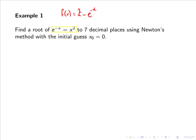Note that it wouldn't have made a difference if we had written it as e to the minus x minus x squared as we would still get the same answer. Now if we differentiate this we will get f dash of x equals 2x plus e to the minus x.